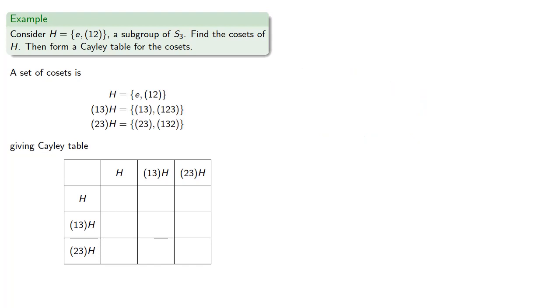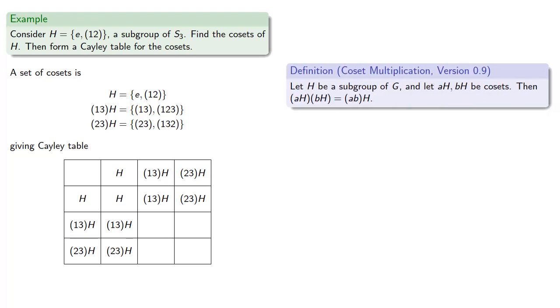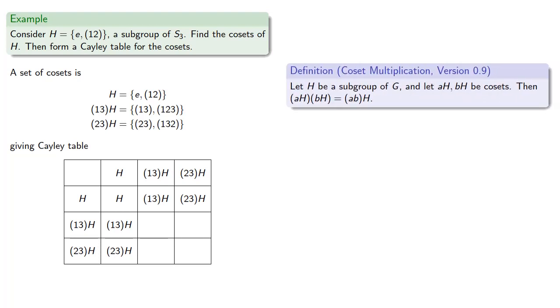And so we can form our products. Because H is the identity, that gives us the first row and first column of our Cayley table. And using our definition, we can find the remaining products. (1,3)H by (1,3)H, well that's the product (1,3)(1,3)H, and (1,3)(1,3) is the identity, so that just gives us H.